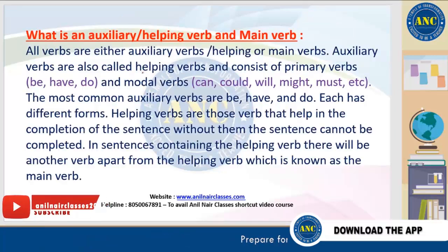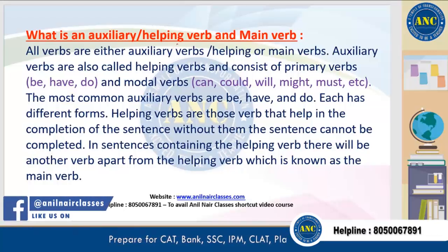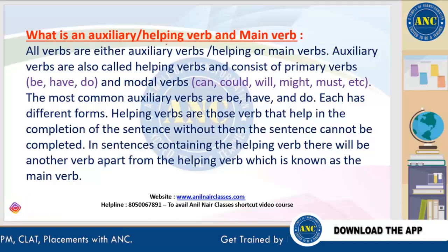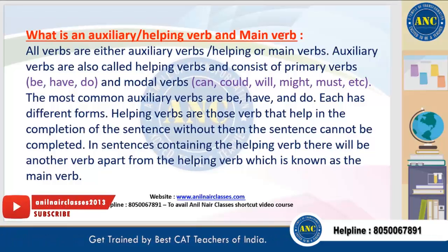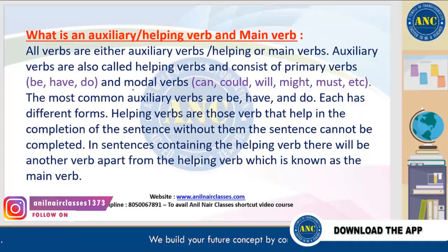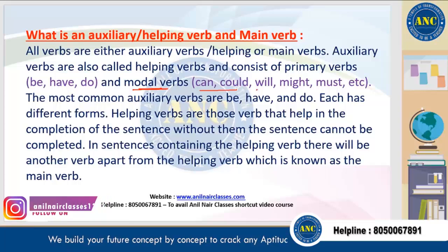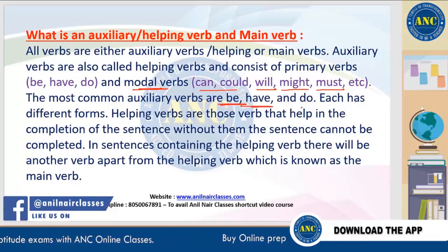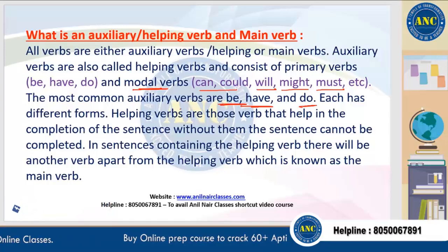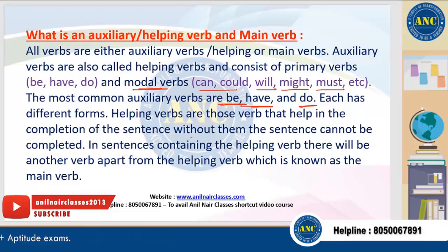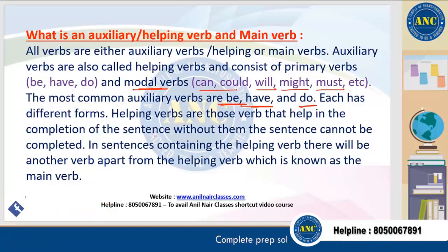Auxiliary verb and helping verb are the same. The main verb is the main action verb; before it we can have the helping verb. Together the helping verb and the main verb are called the verb phrase. These helping verbs could be forms of 'to be' or 'to have,' or modal verbs like can, could, will, would, might, must. The common auxiliary or helping verbs are forms of to be, to have, and do. Without them, the sentence meaning may not be complete.